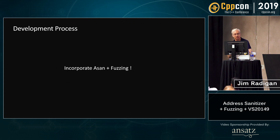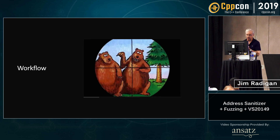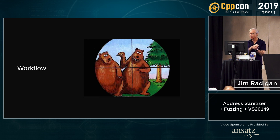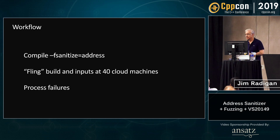The development process: what we want is for people to incorporate ASAN and fuzzing — it's really, really important. The workflow is: compile your application, fling it at 40 cores in the cloud, and then process the failures. That last step is what's really hard. You've got Visual Studio 2019 with the compiler, the runtime, and a new IDE — and then there's the cloud: 40 cores.